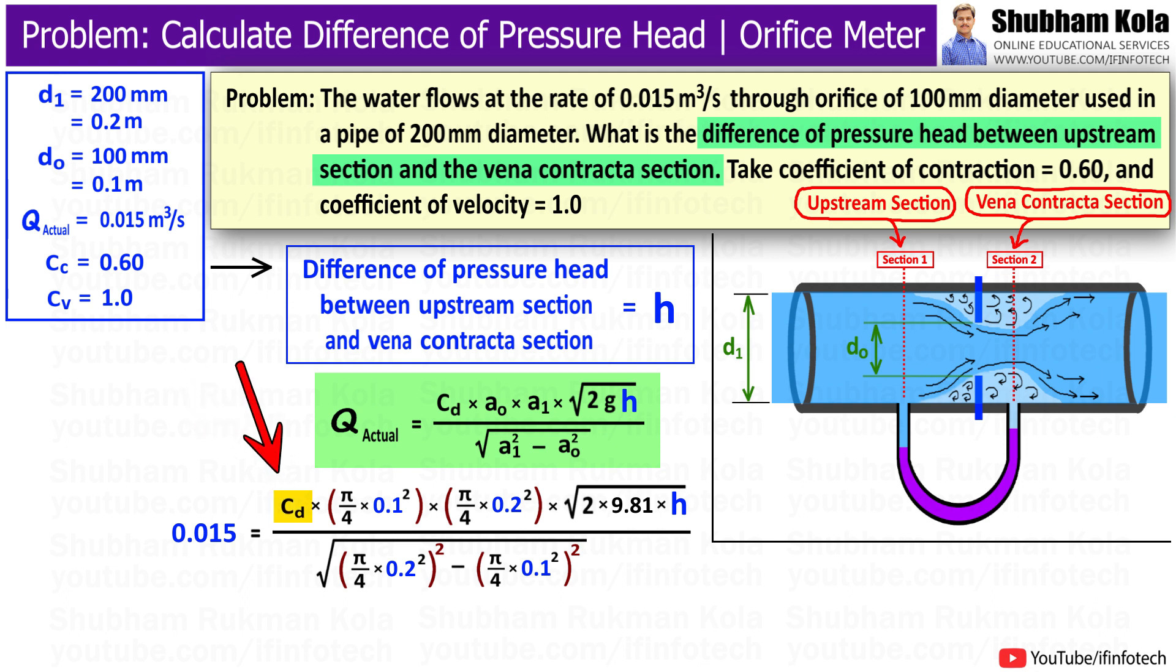In this formula, we need to calculate coefficient of discharge Cd, which we can calculate using the relation Cd equals Cc times Cv. Here Cc is 0.60 and Cv is 1.0, therefore Cd equals 0.6.